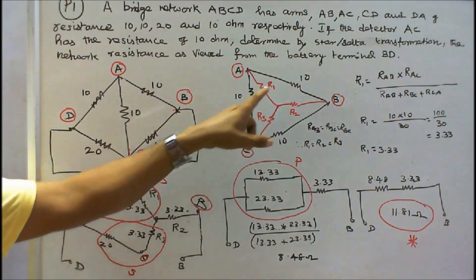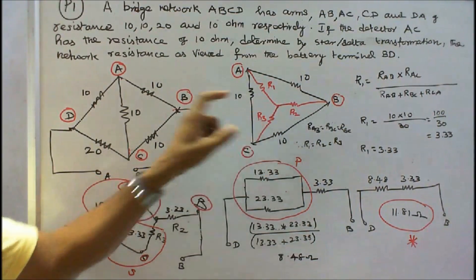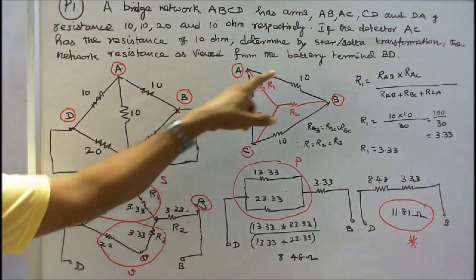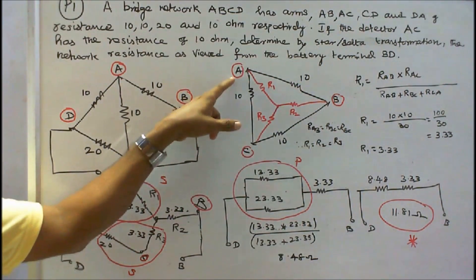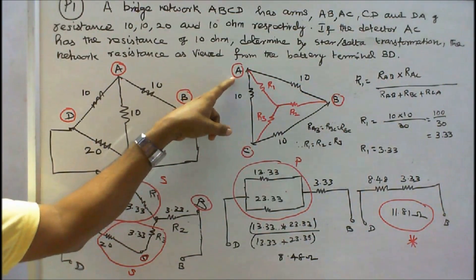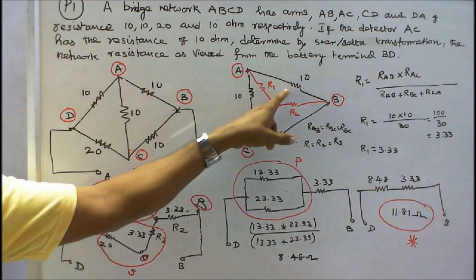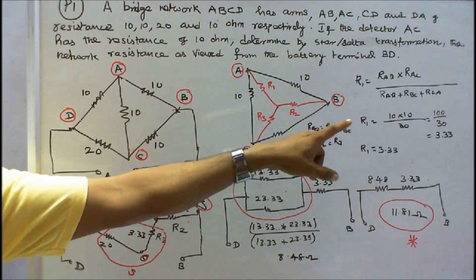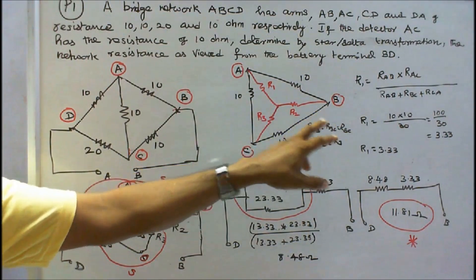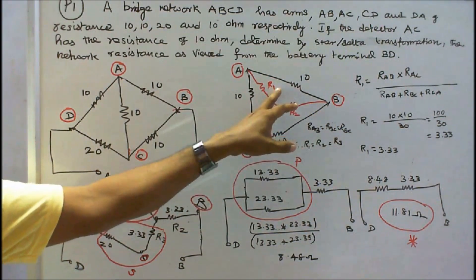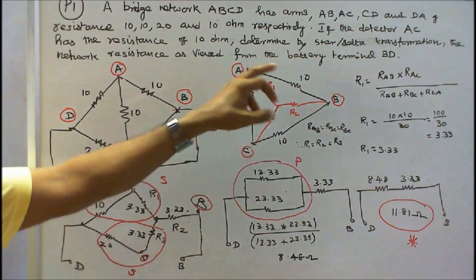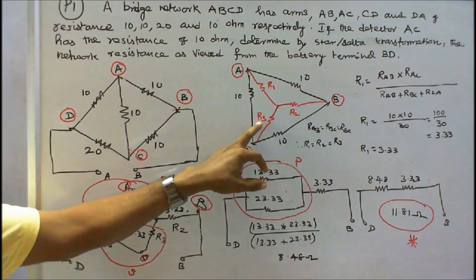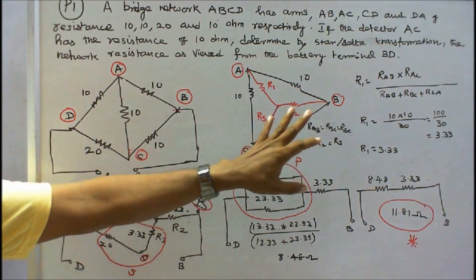I have to find R1, R2, R3. R1 is equal to RAB × RAC divided by RAB plus RBC plus RCA. That is equal to 100 divided by 30, which equals 3.33. Here all the resistances are equal, so R1 = R2 = R3 = 3.33 ohms.